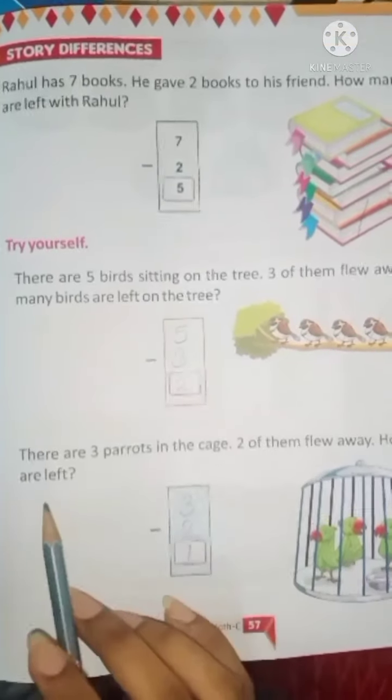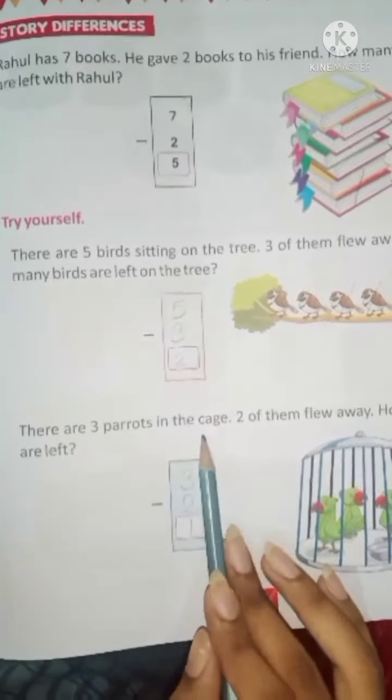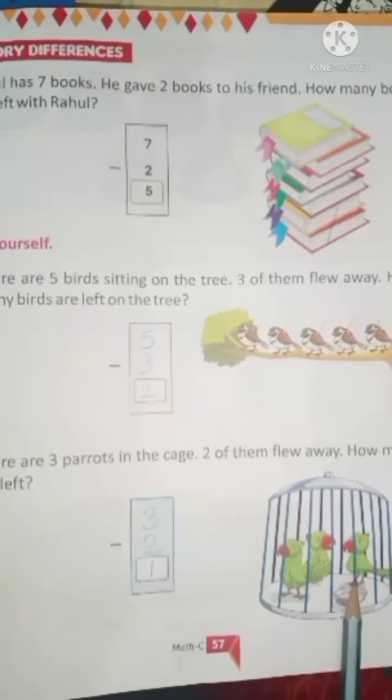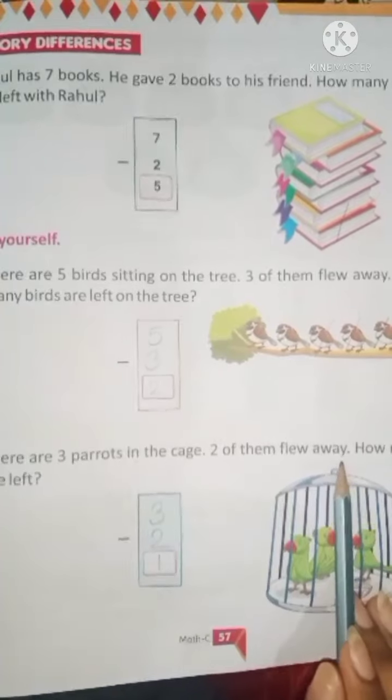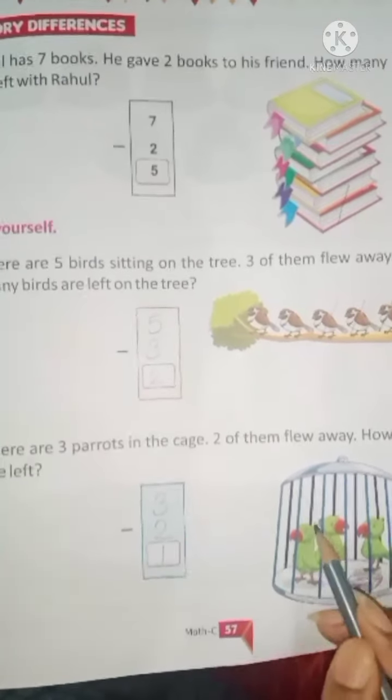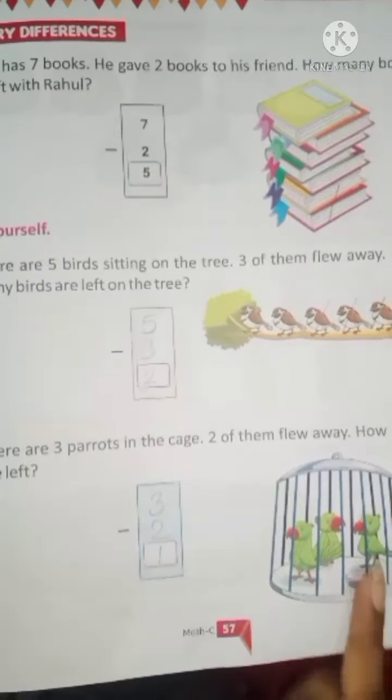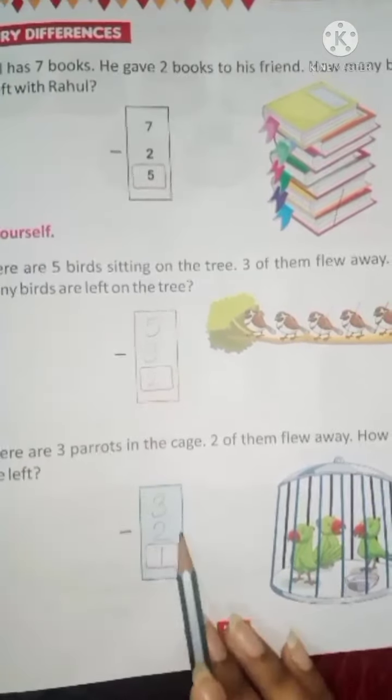Now, tell me how many birds are left on the tree. Now, count 1, 2. So, here we will write 2. Like this same. There are 3 parrots in a cage. Ek cage ke anndar kitne parrots hain? 3 parrots hain. 1, 2, 3. Ok. 2 of them flew away. Just means it 2 parrots ura gai. Toh, hum 2 parrots ko cut kar dhenge. Now, tell me how many parrots are left? 1. So, here you will write 3 minus 2. That is 1.